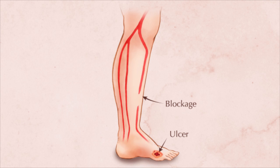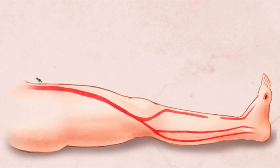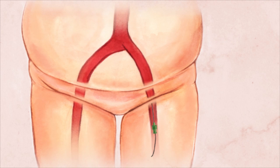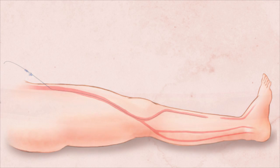A minimally invasive procedure to treat critical limb ischemia may be available from your interventional radiology doctor. Your doctor begins by inserting a guide wire into the femoral artery in your thigh. Sometimes the leg opposite the side of the symptoms is used for initial access. A tapered sheath is then inserted over a wire to provide easy access into your blood vessels for the small tools required to perform the procedure.